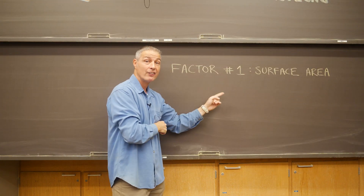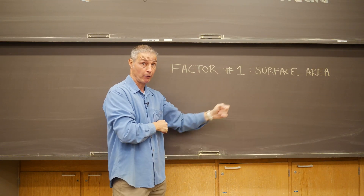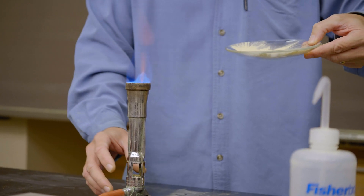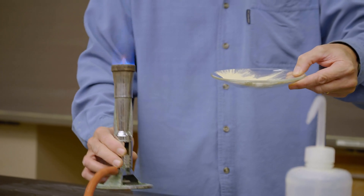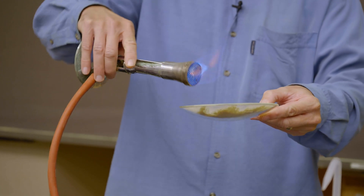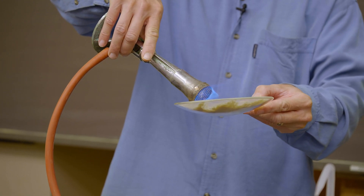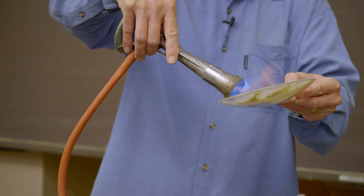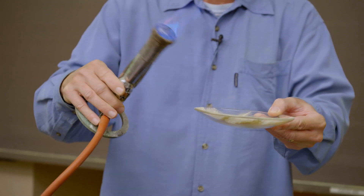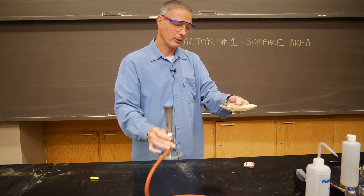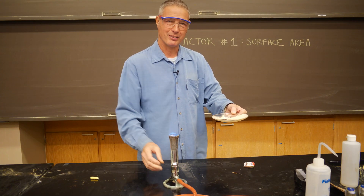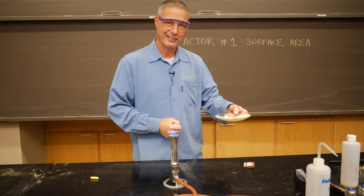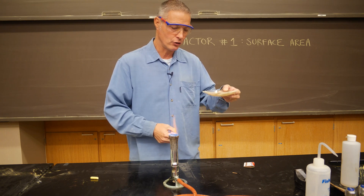Factor number one is surface area. This is lycopodium powder — it's from the spores of moss plants and it burns. Not that well though when it's all clumped up. I can make it kind of singe if I put the flame next to it, but not really when it's all clumped up and has a very low surface area. It can't get in contact with the oxygen molecules.